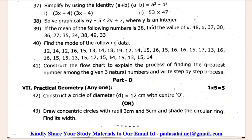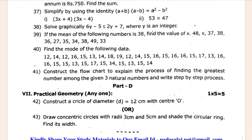You have 1 cm. Construct a circle of diameter D = 12 cm. That is the center. Draw the circle of diameter, draw the circle of radius. Find the width. You can see the circle of radius. You have 5 marks.